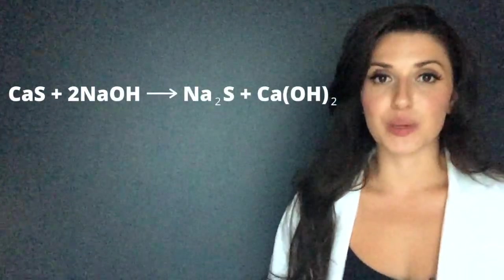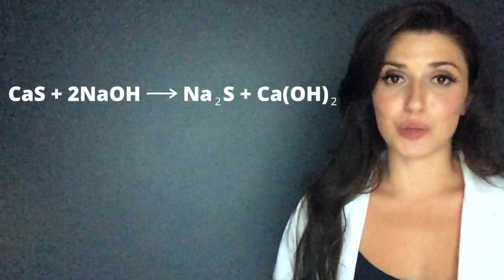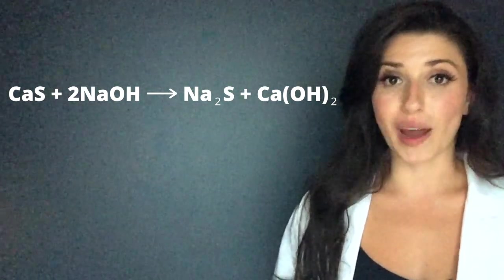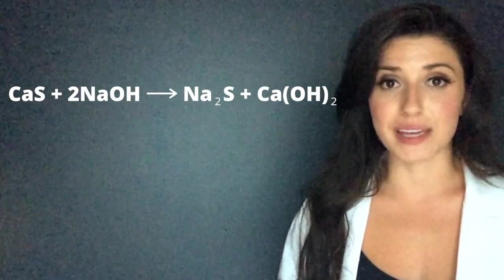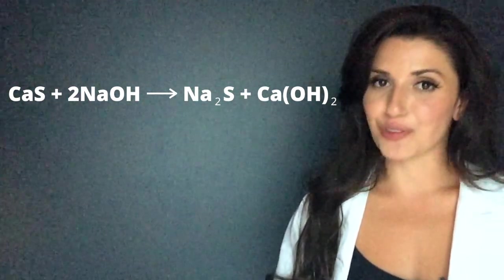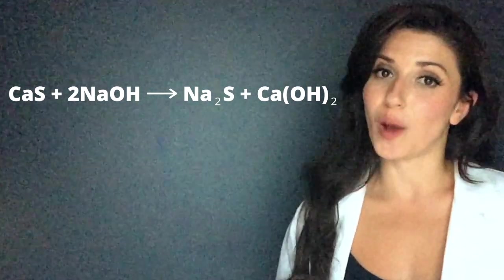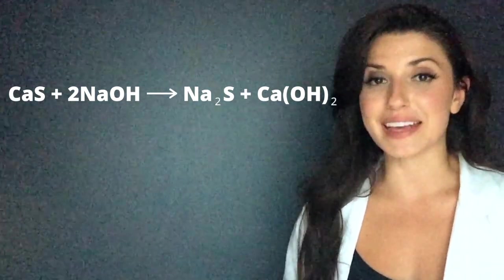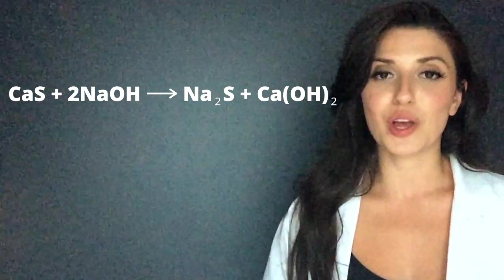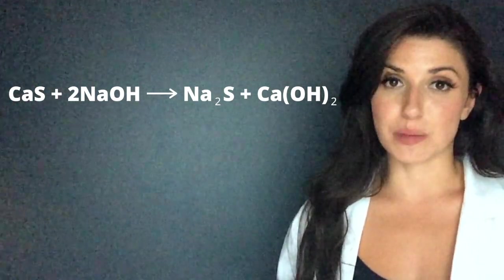When we look at that table, we learn that sulfides are insoluble unless they're bound with a group one element, a group two element, or the NH4 cation. In the case of sodium sulfide, sodium is a group one element, so that will make sodium sulfide soluble. So we know that is not a precipitate.